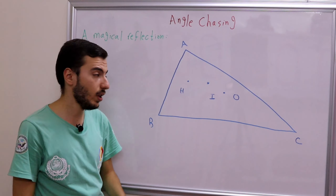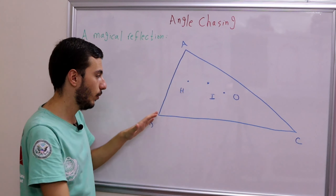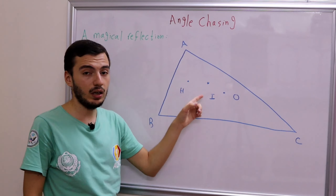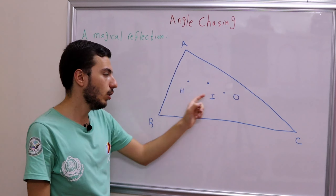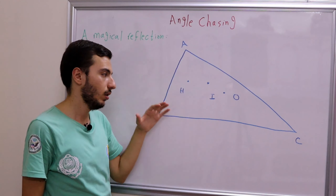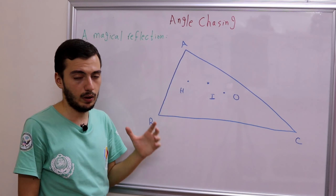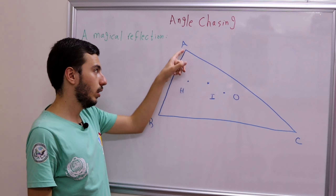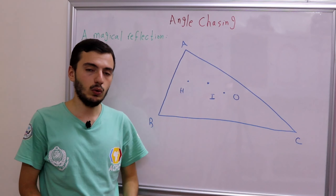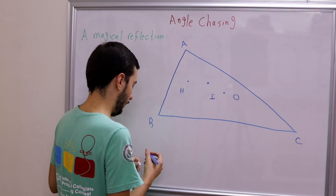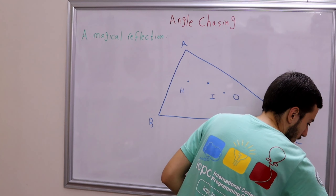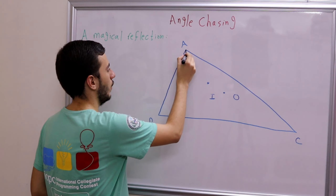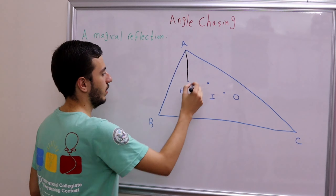We're familiar with H and its angles. If you remember, angle BHC = 180° − A, angle BIC = 90° + A/2, and angle BOC = 2A. We've discussed all their angles in our three first videos. Now let's draw AH, AI, and AO to find some cool stuff. Let's put those in black.